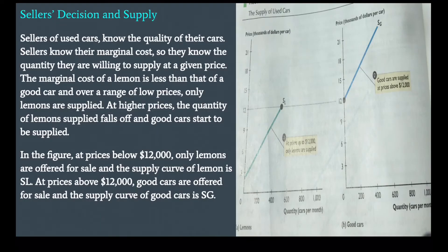Sellers of used cars know the quality of their cars and their marginal costs, so they know the quantity they are willing to supply at a given price. The marginal cost of a lemon is less than that of a good car, and over a range of low prices, only lemons are supplied. At higher prices, the quantity of lemons supplied falls off and good cars start to be supplied. In the figure, at prices below $12,000, only lemons are offered for sale and the supply curve of lemons is SL. At prices above $12,000, good cars are offered for sale and the supply curve of good cars is SG.